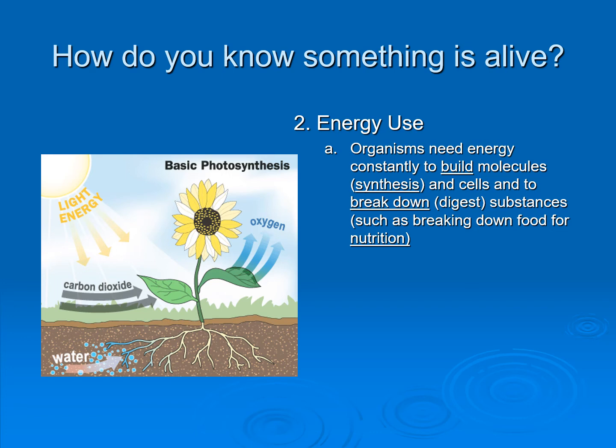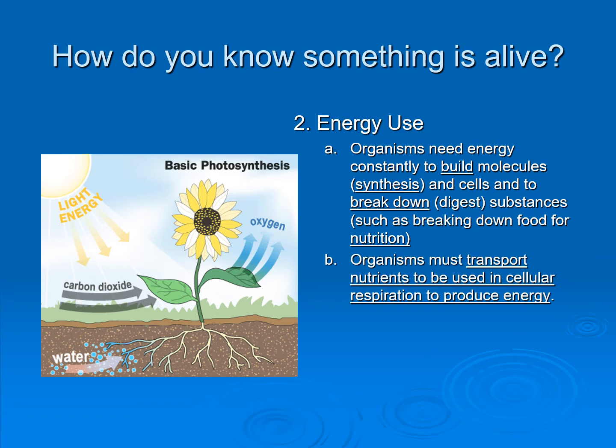We either consume plants or we consume animals that have consumed plants. We break down digestive substances and build them into new molecules — a particular molecule called adenosine triphosphate, which you'll learn about later this year, which is a storage system for how we're going to use that energy later on. We can also convert adenosine triphosphate into things such as fats to store energy. Energy use is essential for something to be alive.